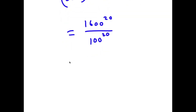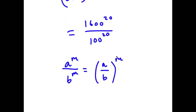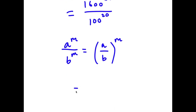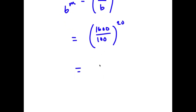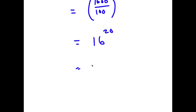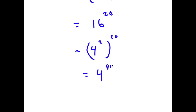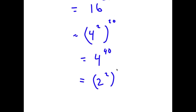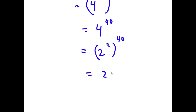If I have something in the form a to the power of m over b to the power of m, this is equal to a over b to the power of m. So 1,600 to the power of 20 over 100 to the power of 20 is 1,600 over 100 to the power of 20. And 1,600 over 100 is 16, so I have 16 to the power of 20. And 16 is the same as 4 to the power of 2, so I have 4 to the power of 2 to the power of 20, which is 4 to the power of 40. And 4 is 2 to the power of 2, so I have 2 to the power of 2 to the power of 40, which is 2 to the power of 80.